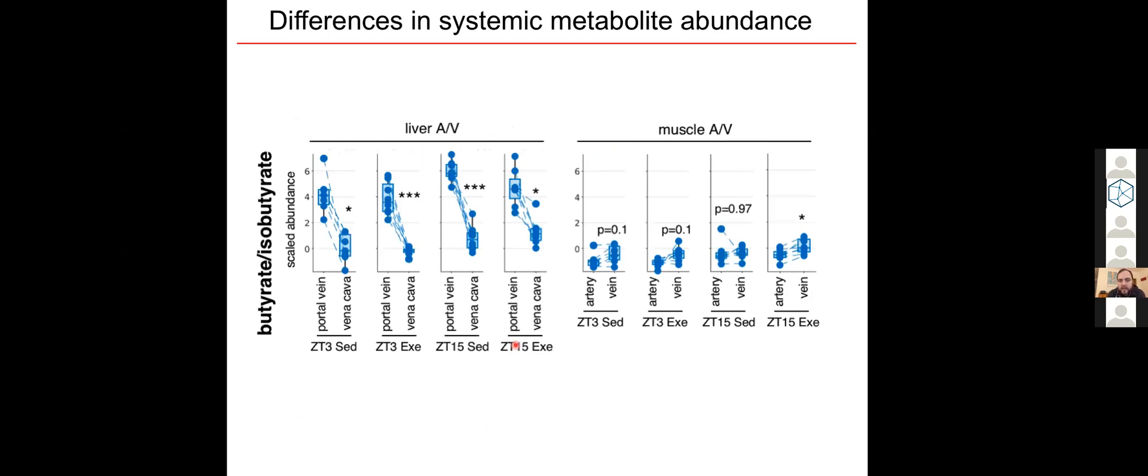Our AV data allows us to investigate these regional differences in circulating metabolite concentrations, which we weren't able to do previously. And this, I think, is very cool. We're just kind of at the tip of the iceberg here for this, so I'm excited to continue looking in this direction.